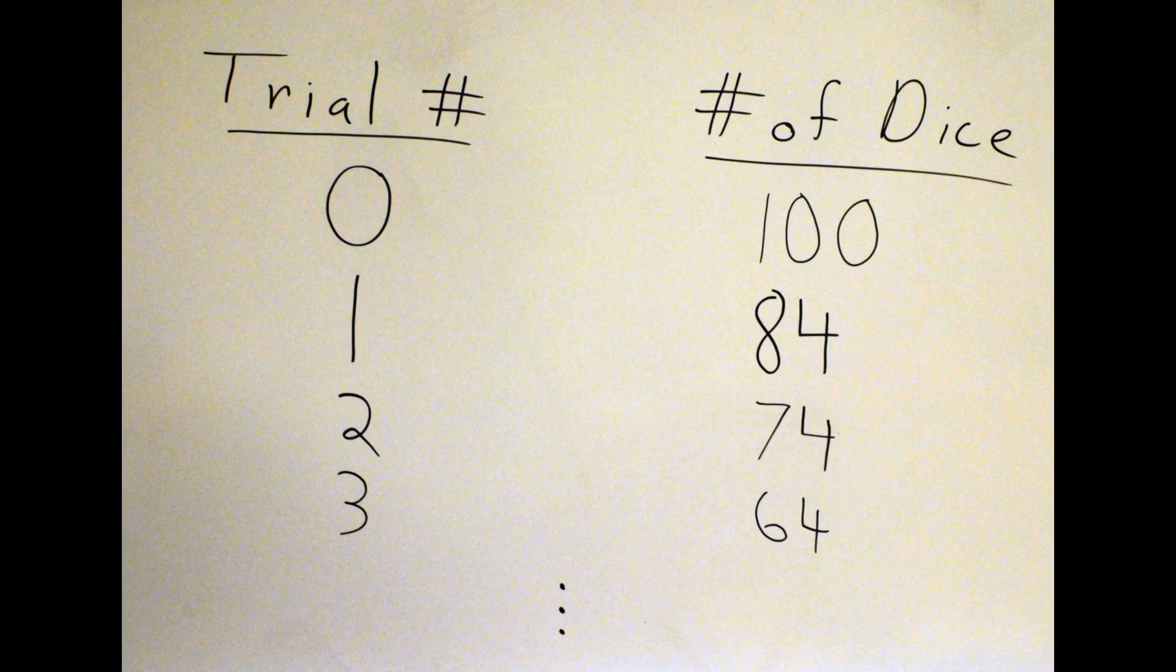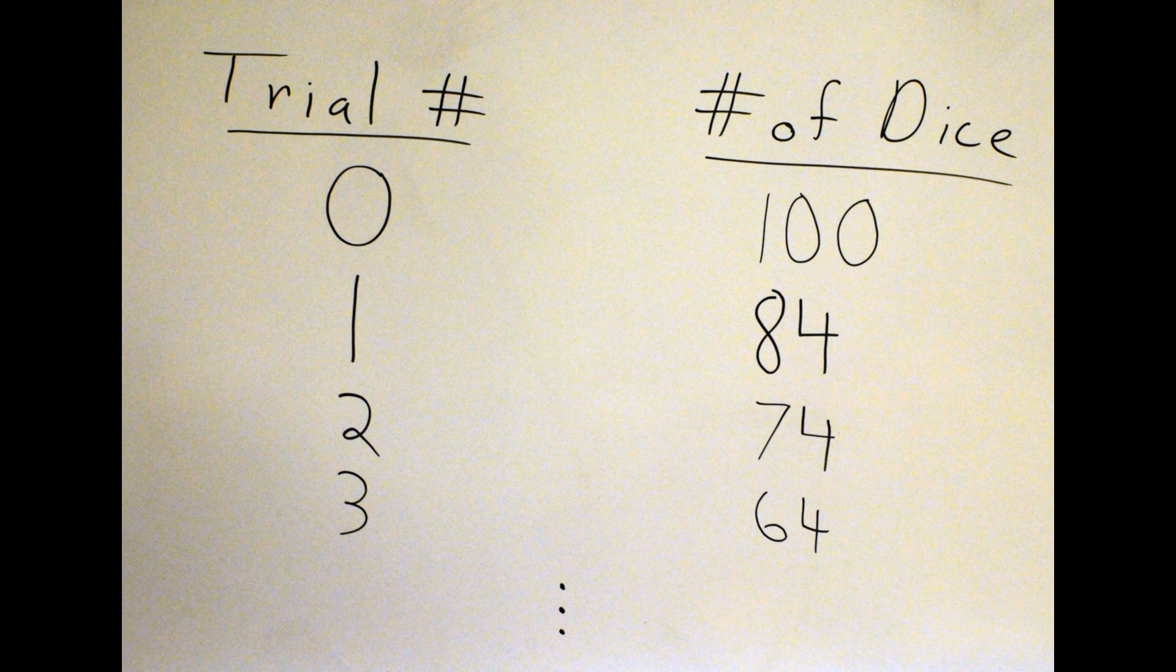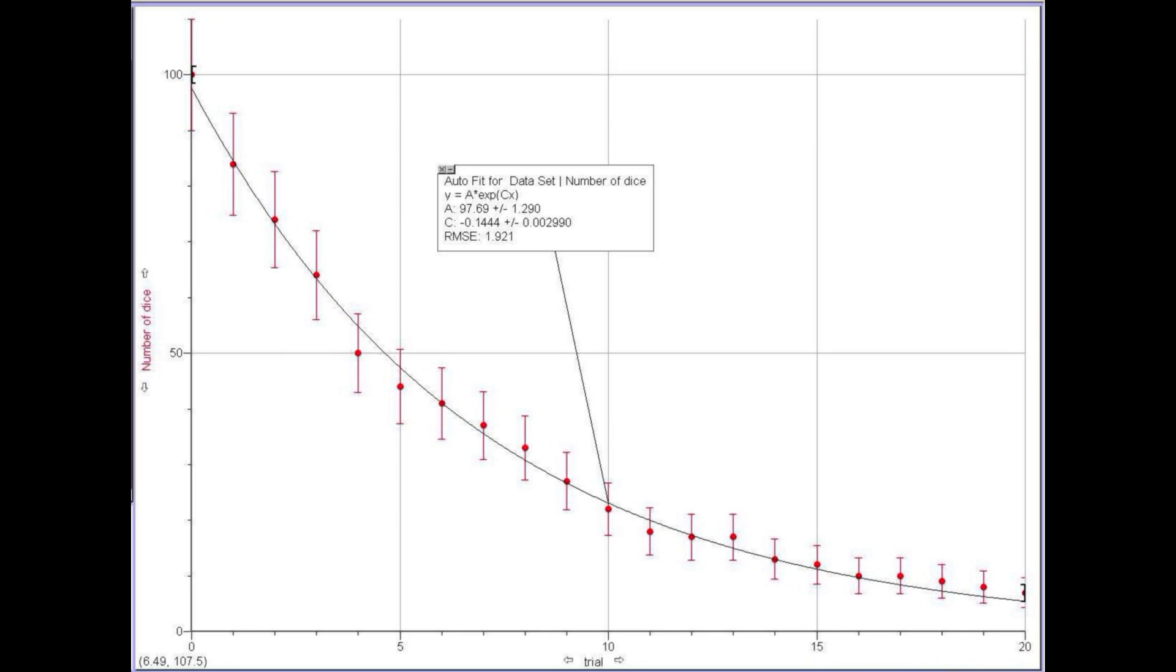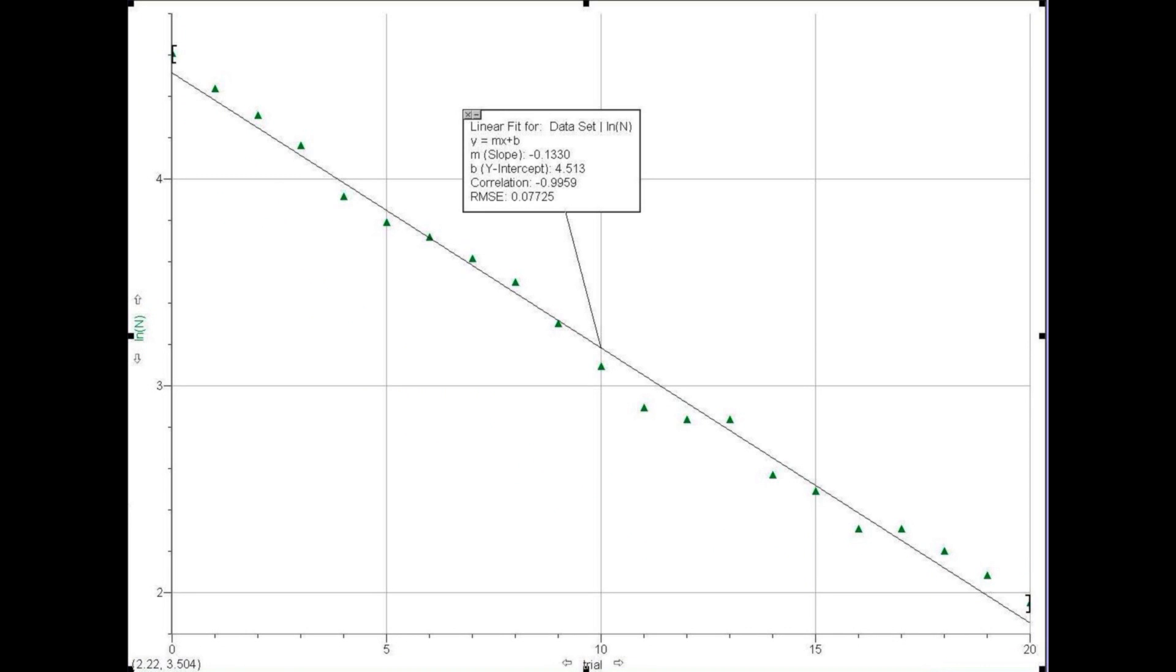Record the number of remaining dice versus trial number. Plot the number of dice versus trial number and fit 0.5 raised to the b times x to get the half-life from the inverse of b. Fit an exponential to the same data to get the decay constant. Finally, plot the natural log of the number of dice versus the trial number and get the decay constant from the slope of the linear fit.